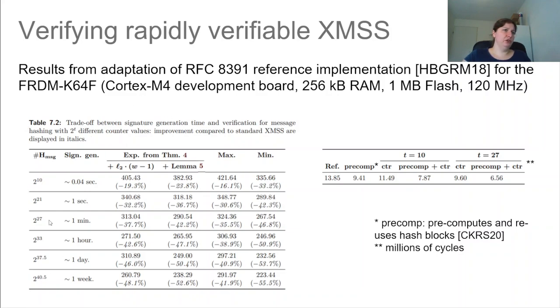So for instance, here on the left, if a signer adds 2 to the power 32 counters, which makes the signing time about an hour, then they can expect to have a performance gain for the verifier between 40 and 50%, which is quite good. And then in cycles on this Freedom Board, we see that compared to the reference implementation and also adding some pre-computation tricks from CKRS 20, we can actually get, given a signing time of about a minute, we can get these 13.8 million cycles down to about 6.56 million cycles, which is a huge performance gain.